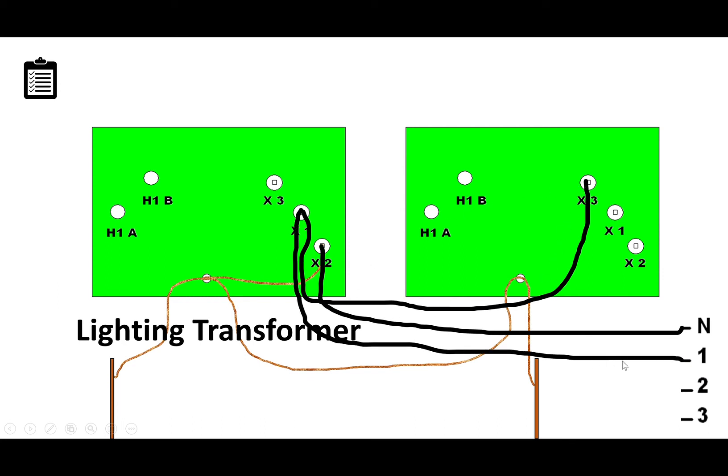The next thing we'll do is connect the secondary lighting leg, one of the first lighting legs, to the X1 of the left hand lighting transformer. The next wire I connect is the next lighting leg coming from the customer to the X3 of the lighting transformer. At this point, the lighting transformer is feeding all of the lighting load.